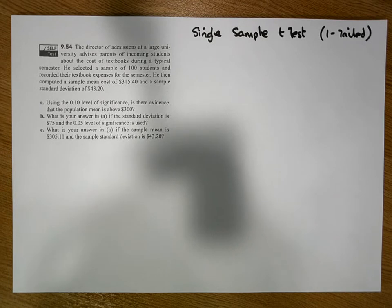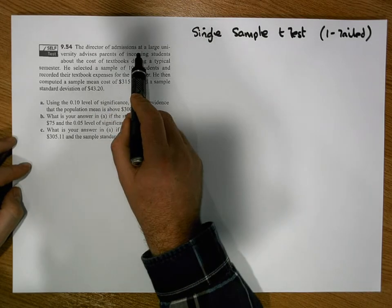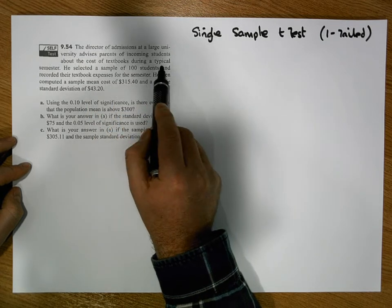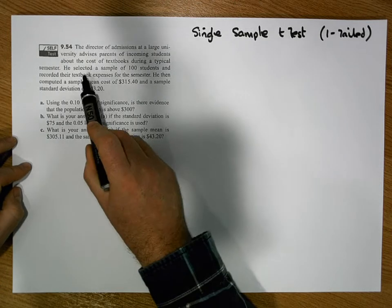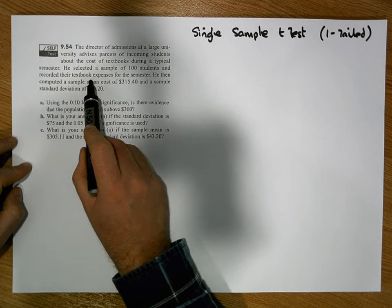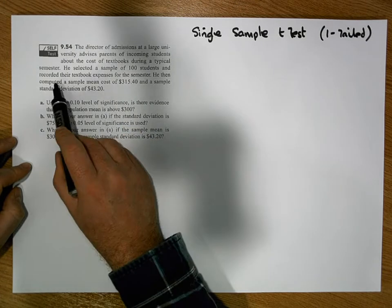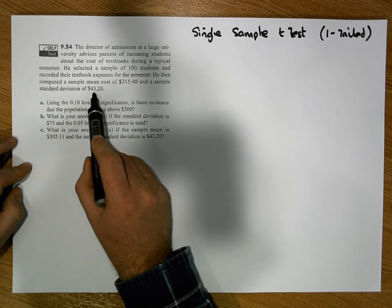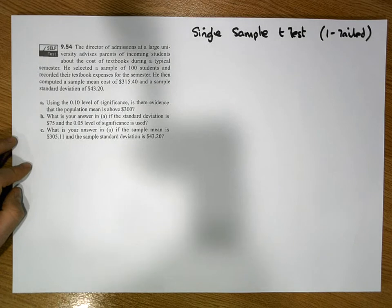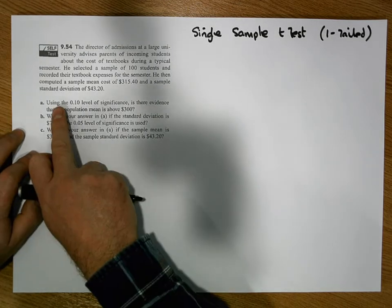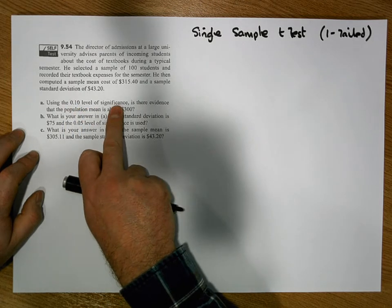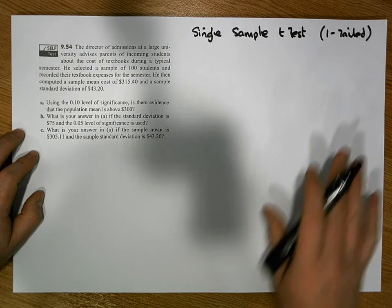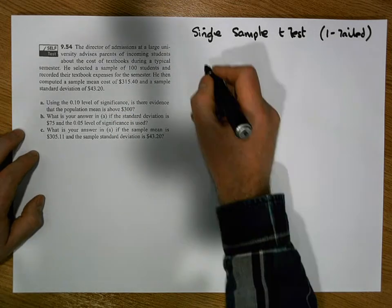The director of admissions at a large university advises parents of incoming students about the cost of textbooks during a typical semester. He selected a sample of 100 students and recorded their textbook expenses for the semester. He computed a sample mean cost of $315.40 and a sample standard deviation of $43.20. Using the 0.10 level of significance, is there evidence that the population mean is above $300?